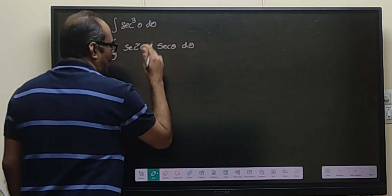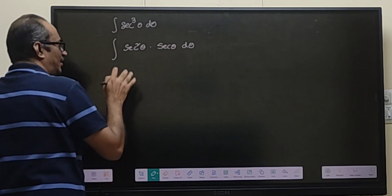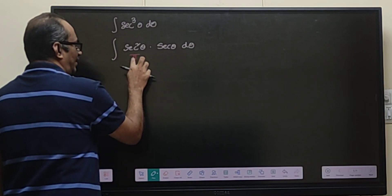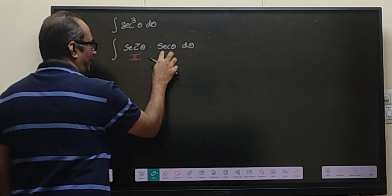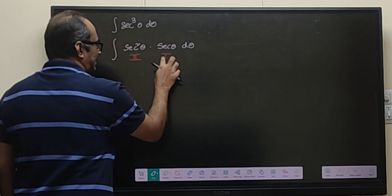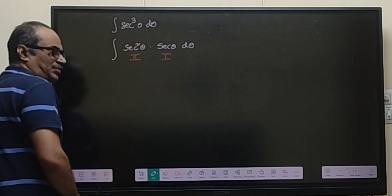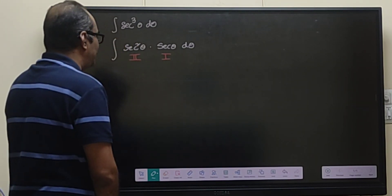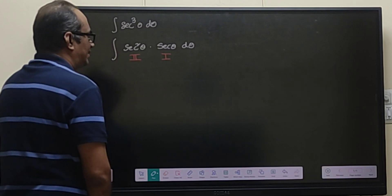Why are we doing that? Because we know the integral of secant square theta, that is tan theta, and we know the derivative of secant theta. That is how we choose our two functions whenever we want to use integration by parts.